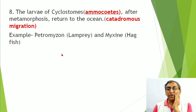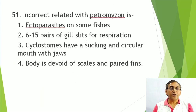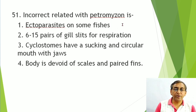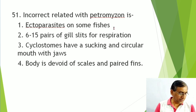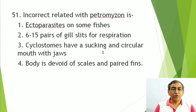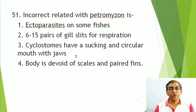Examples of Cyclostomata: Petromyzon (lamprey) and Myxine (hagfish). Petromyzon is a jawless vertebrate. Practice question on incorrect features of Petromyzon: ectoparasites on fishes ✓, 6–15 pairs of gill slits ✓, sucking circular mouth ✓, body devoid of scales and paired fins ✓. The incorrect option is 'with jaws' — cyclostomes are Agnatha, jaw is absent. Answer: option 3.